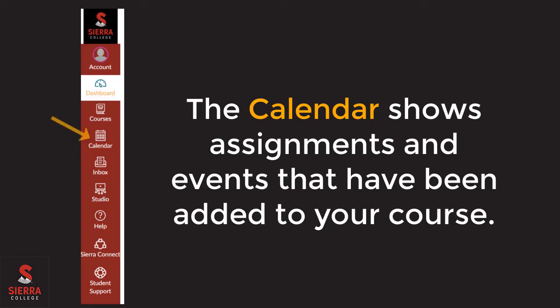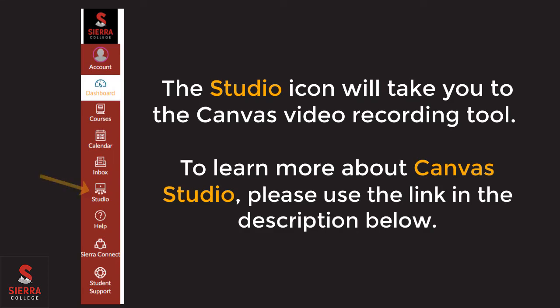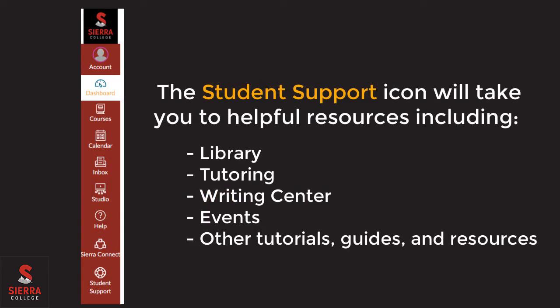The calendar feature in Canvas will show you assignments, due dates, and other events that have been added to your course. This can be a helpful tool in planning your week. The Studio icon represents the video recording tool in Canvas. You can screen record and webcam record using this program, which can be helpful in online classes. There is another tutorial video specific to Canvas Studio. If you would like to view that video, please use the tutorial link in the description below.